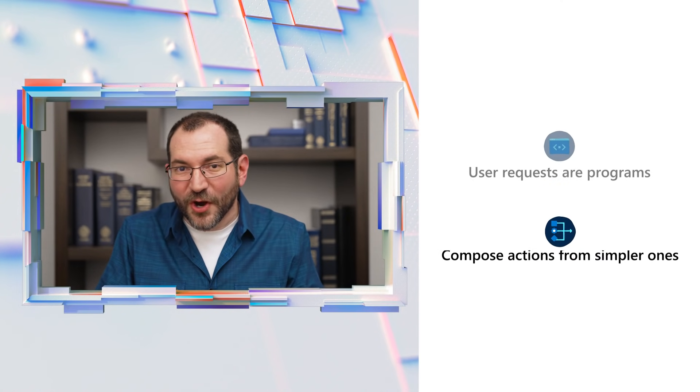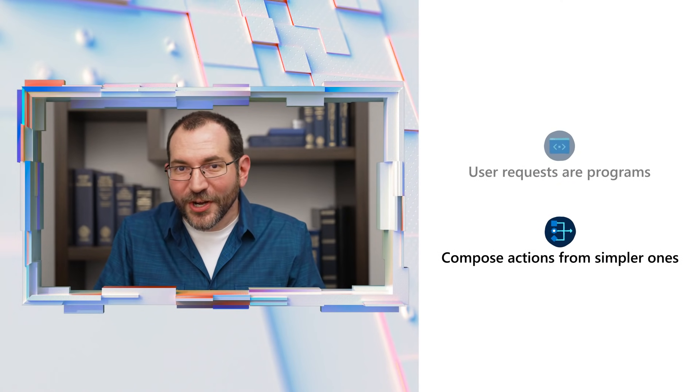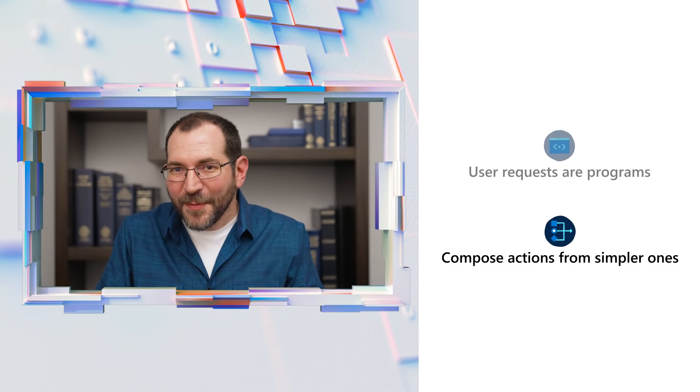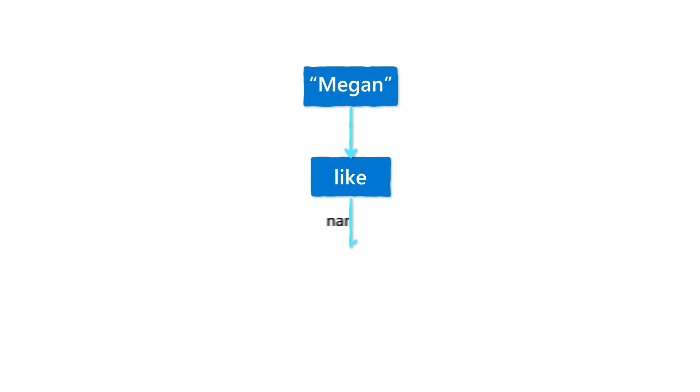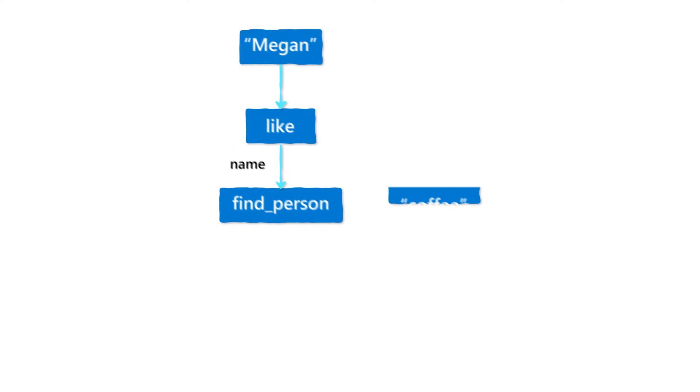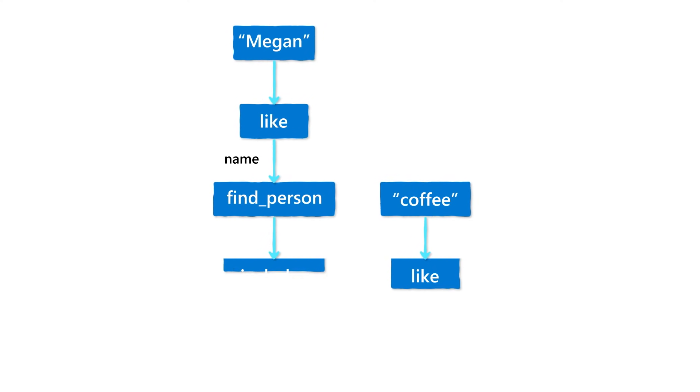Next, complex tasks are built from simple ones. When a user says something like, what time am I getting coffee with Megan, that breaks down into a bunch of steps. Figure out which Megan, look up coffee events with her, find the most salient one, and describe its start time. We can do new complex things by reusing existing simple pieces.